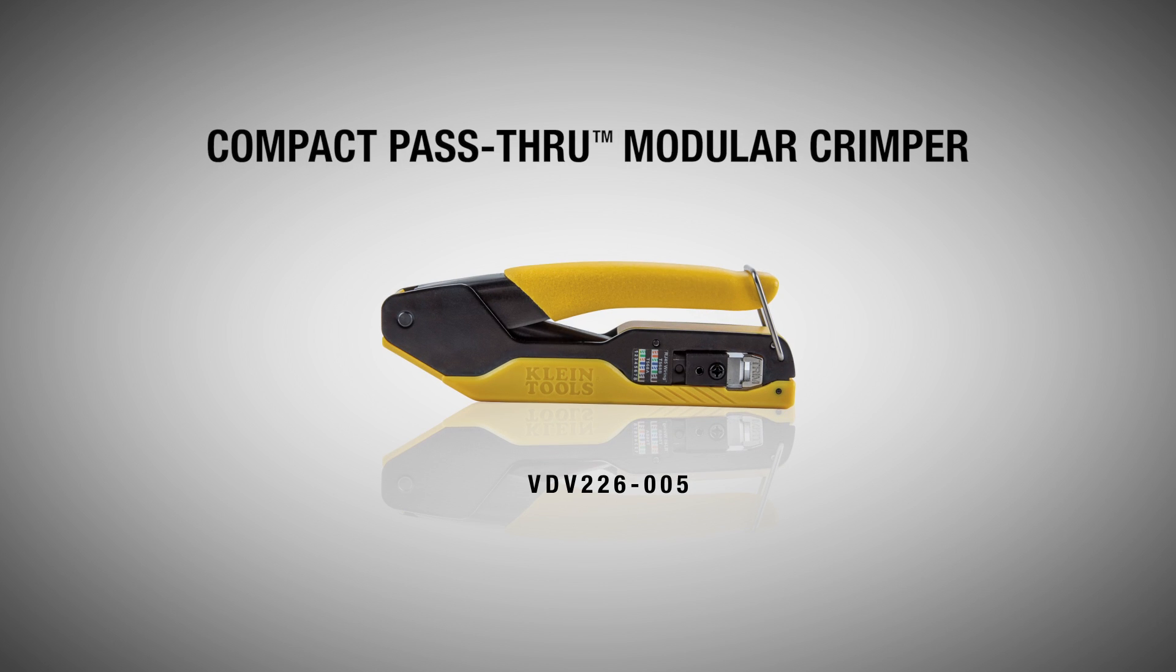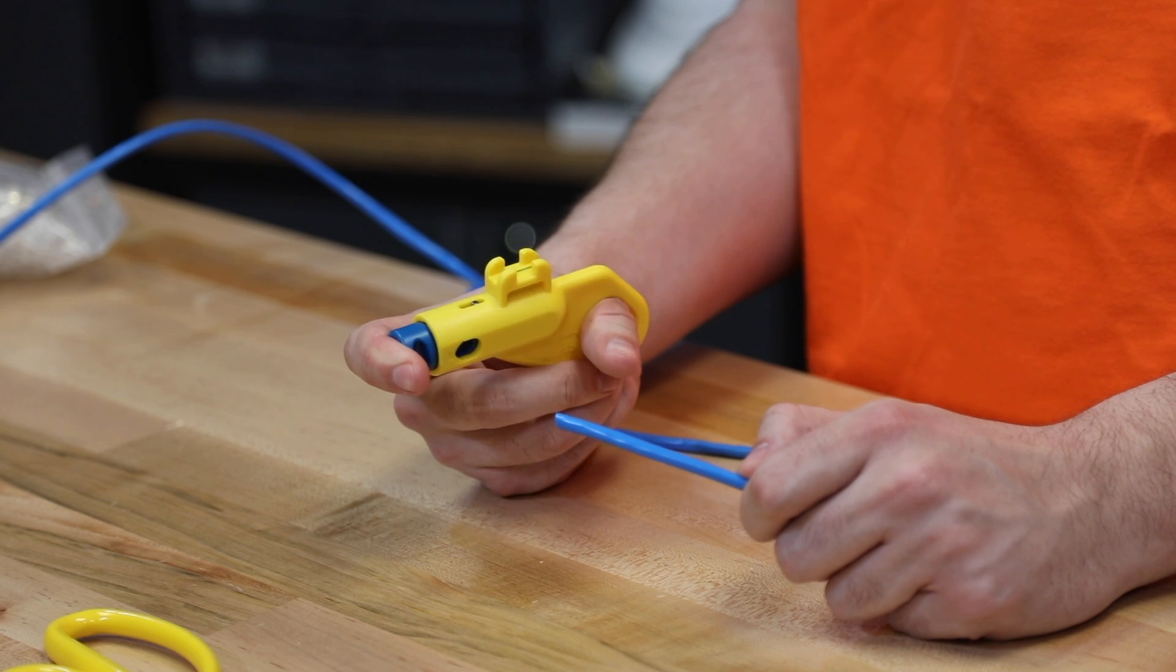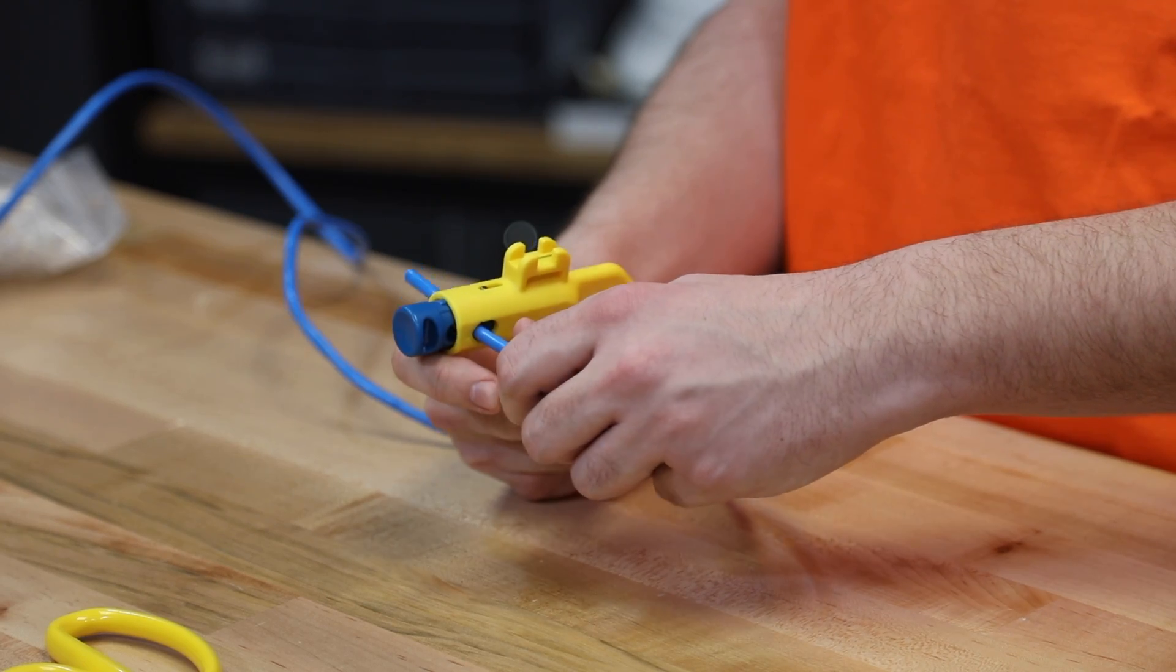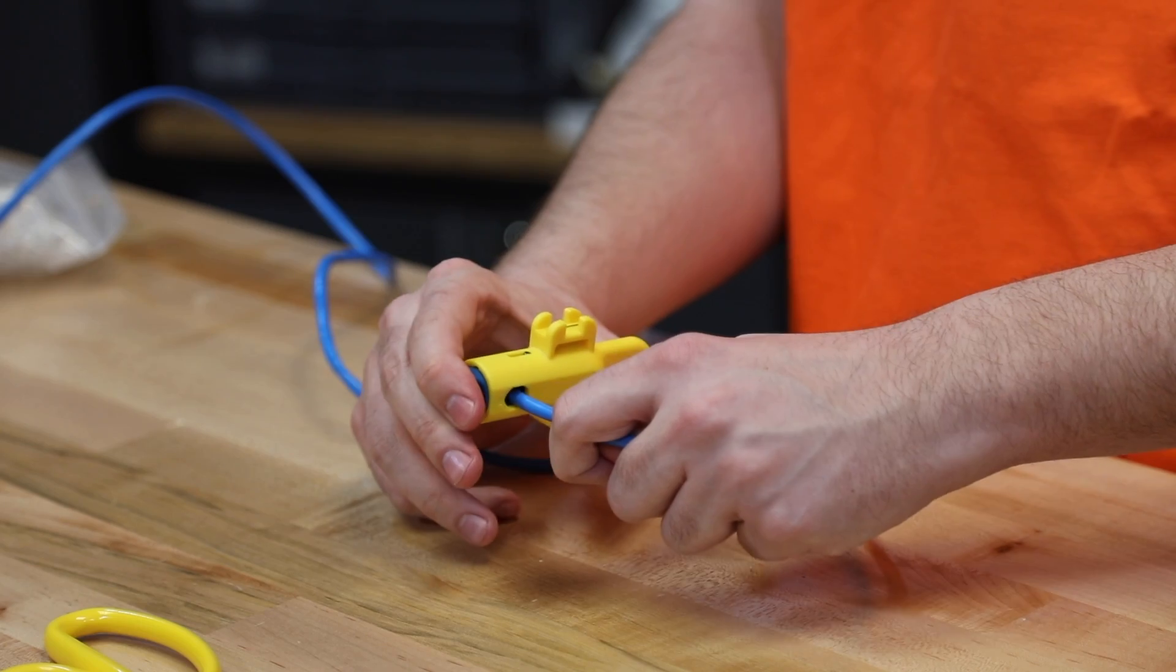To use this crimper, you'll need your radial stripper VDV110261. Depress the loop plunger, insert the cable, let it extend through about an inch and a half, release the plunger, one rotation around, depress the plunger, remove the stripper.